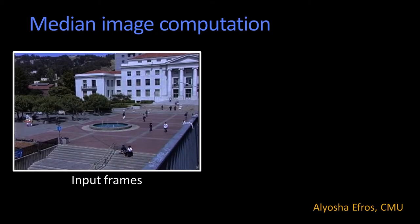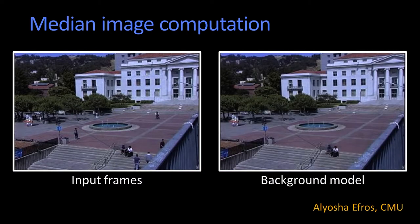Let me show you a better example of doing it. Here are some input frames taken from — I don't remember which campus that is — and this is the background model. That's a pretty clean background model. You'll notice most of the people walking around have disappeared. These people, of course, are still here because they've been here the whole time.